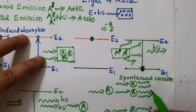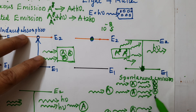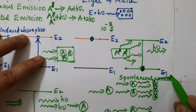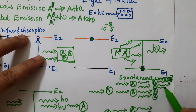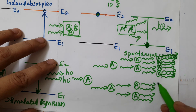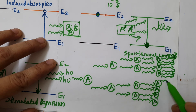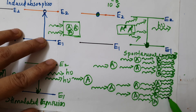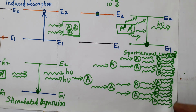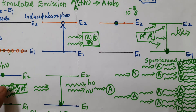These 4 photons further interact with 4 different atoms. For each atom, the stimulated emission produces 2 more photons, resulting in 8 photons total. This continues as a laser chain reaction — a multiplication of light through stimulated emission.